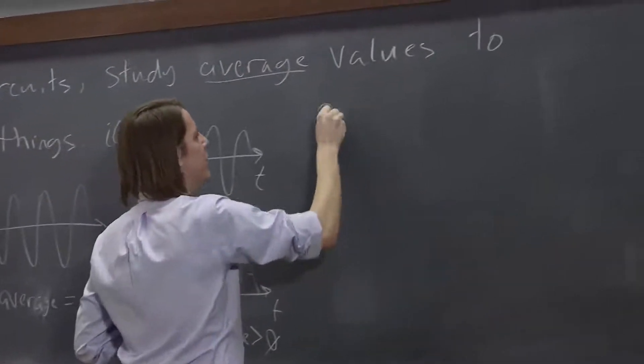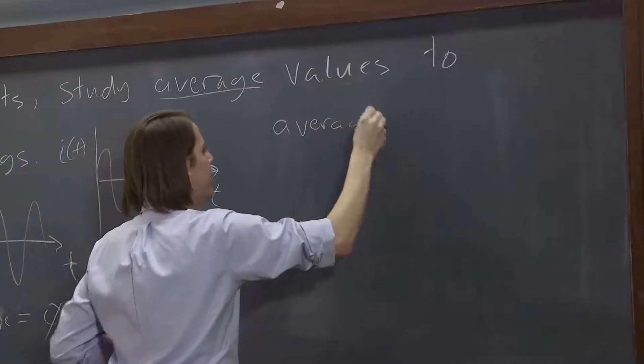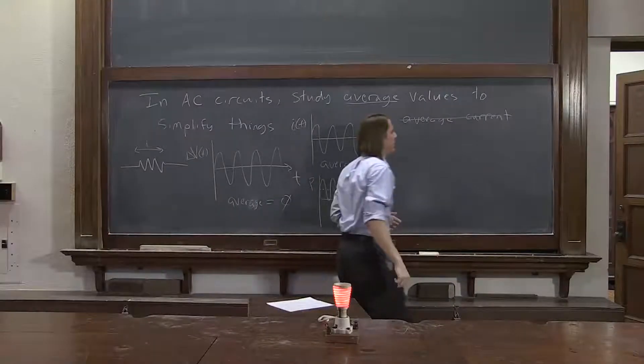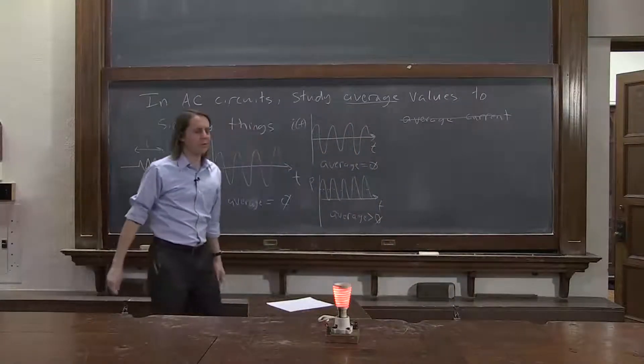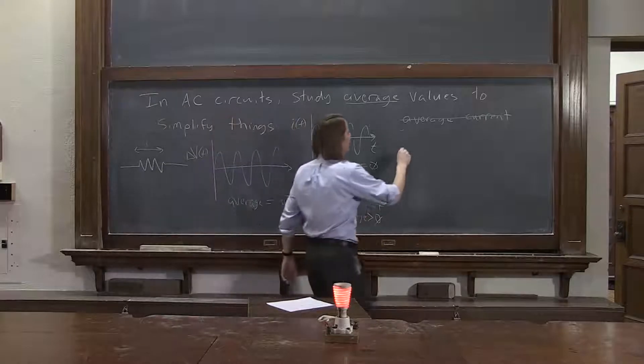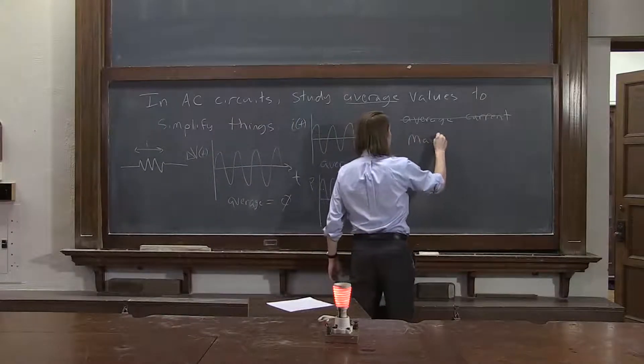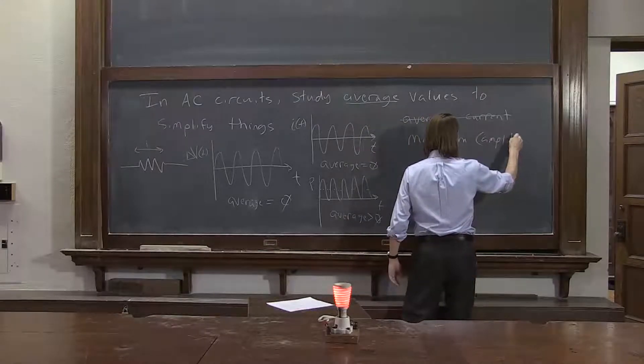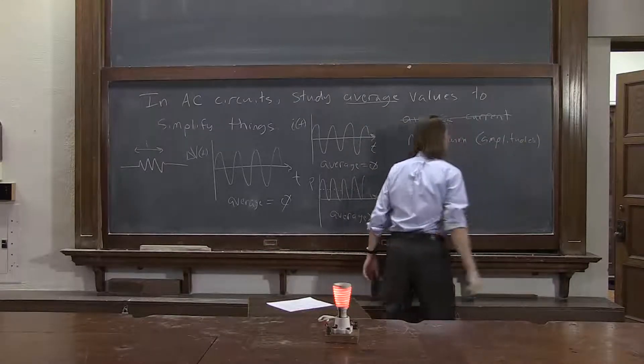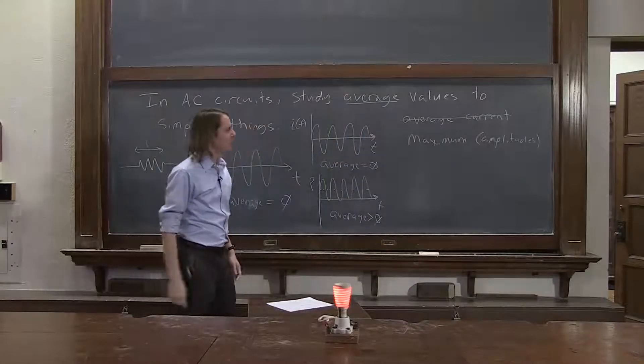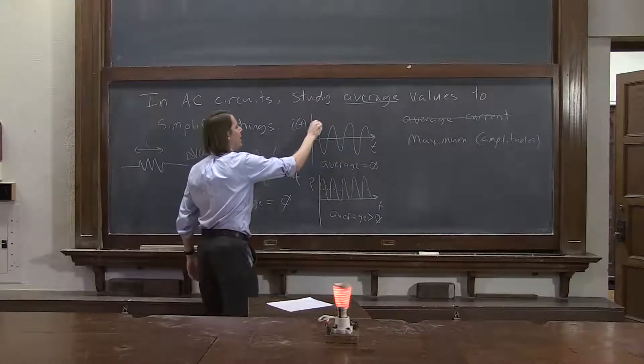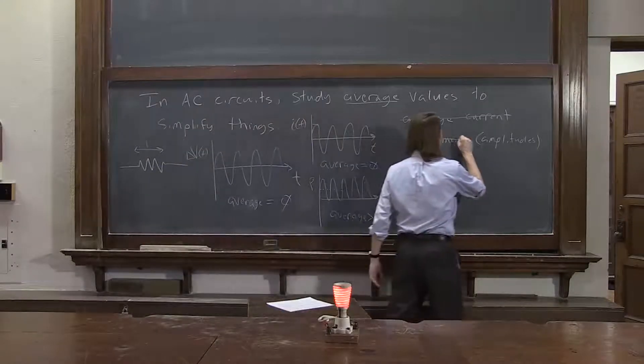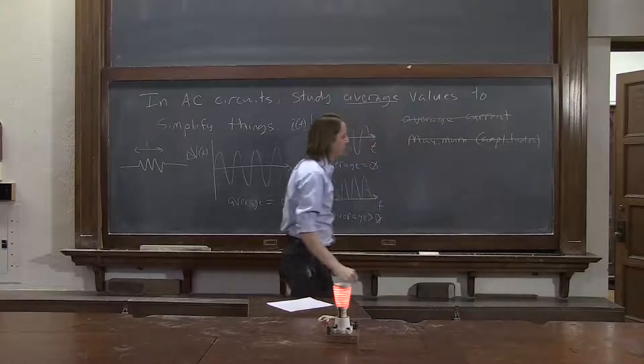We could say, let's just use the average current. But we've already ruled that out. The average current is zero. We don't want to use that. We could use the maximum current, the amplitudes. The problem with using the amplitudes is it's essentially hardly ever at the maximum value. It doesn't really represent an average. It represents a peak. So we don't want to use the maximum.